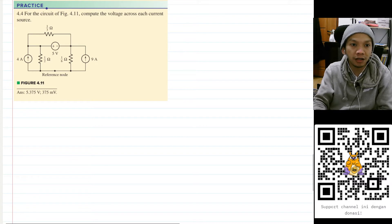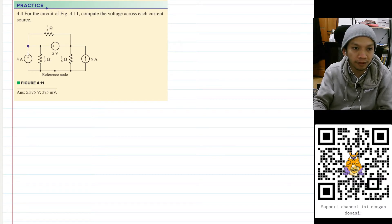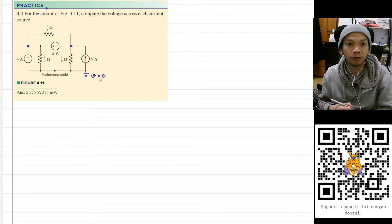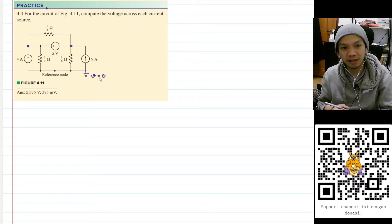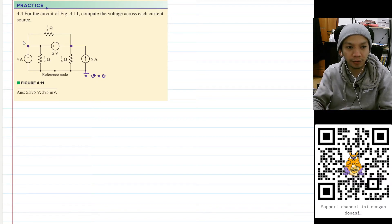So what they ask is to find this voltage here and this voltage here. Okay, and this is the reference node, so we should put the ground sign here. And this means that the voltage here will be equal to zero. Okay, maybe let's name this node as node A.